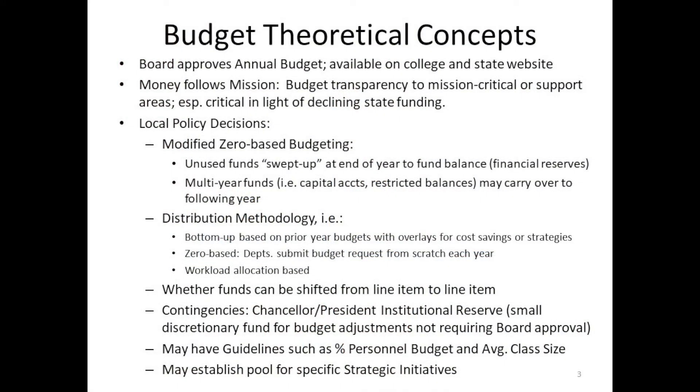I'm going to start with key budget concepts. The information I'm bringing you is really from the lens of you as a trustee. So the basics — some of you may be so new we need to remind you of some of the basics. Part of your major authority is approving the annual budget, and it has to be available on the college website within a certain number of clicks, and we provide it to the state.